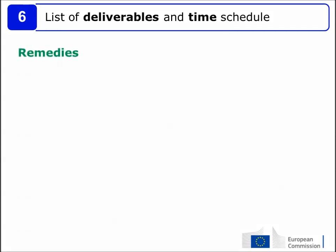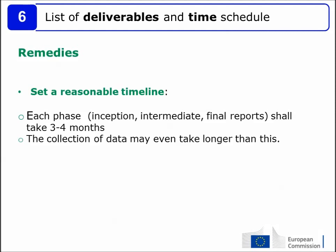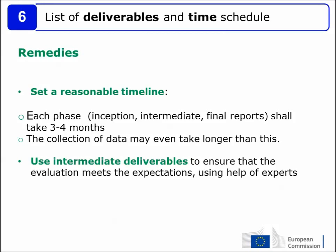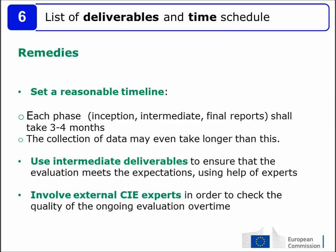To minimise these risks, set a reasonable timeline. Each phase — inception, intermediate, and final report — should take three to four months. The collection of data may take even longer. Use intermediate deliverables to ensure the evaluation meets expectations, and involve external CIE experts to check the quality of the ongoing evaluation.